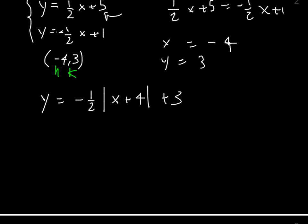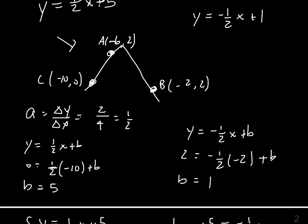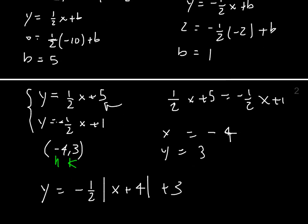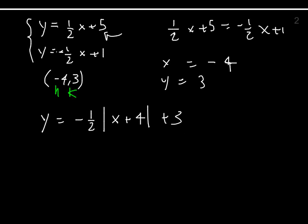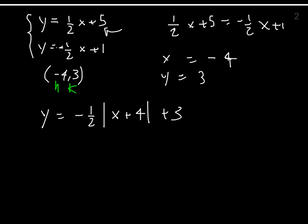How did I know the slope was negative 1 half? The graph opens downwards — my vertex is a maximum. Since it opens downwards, I take the negative of whatever the slope is between the two lines. The slope was 1 half for one side and negative 1 half for the other, and since it opens downwards I choose the negative slope. So the final answer is negative 1 half absolute value of x plus 4 plus 3. That's how you find the rule for the absolute value function given three points.